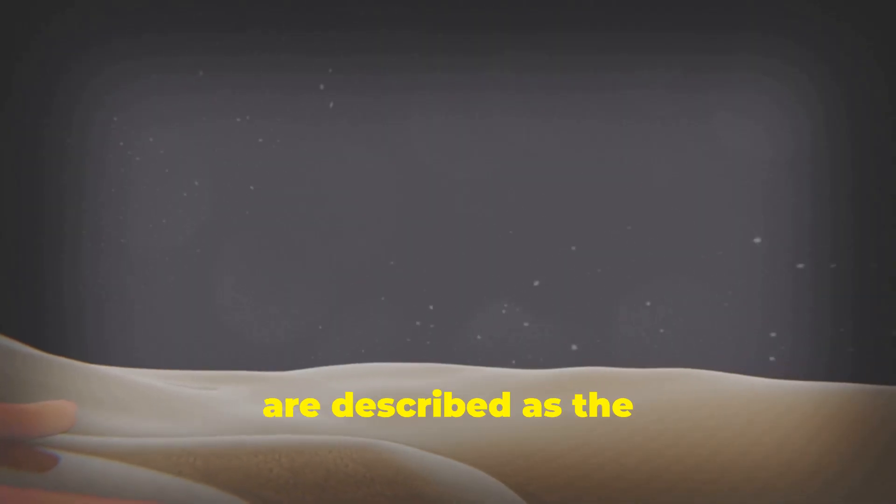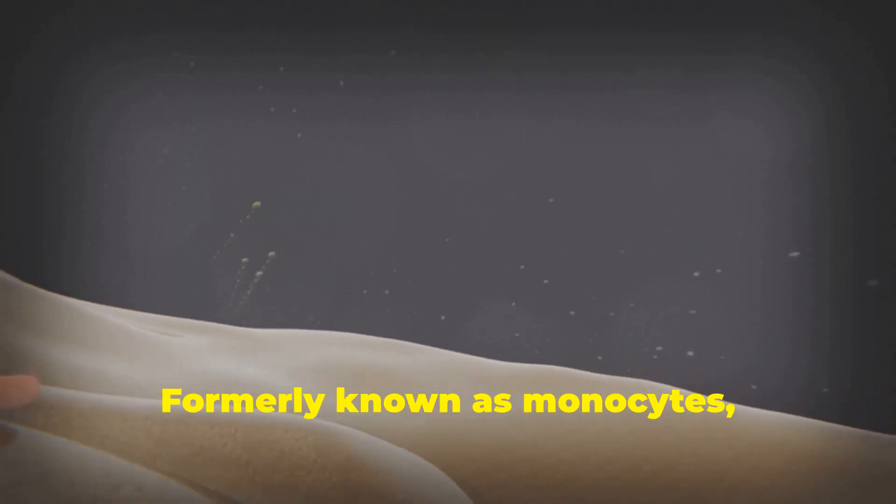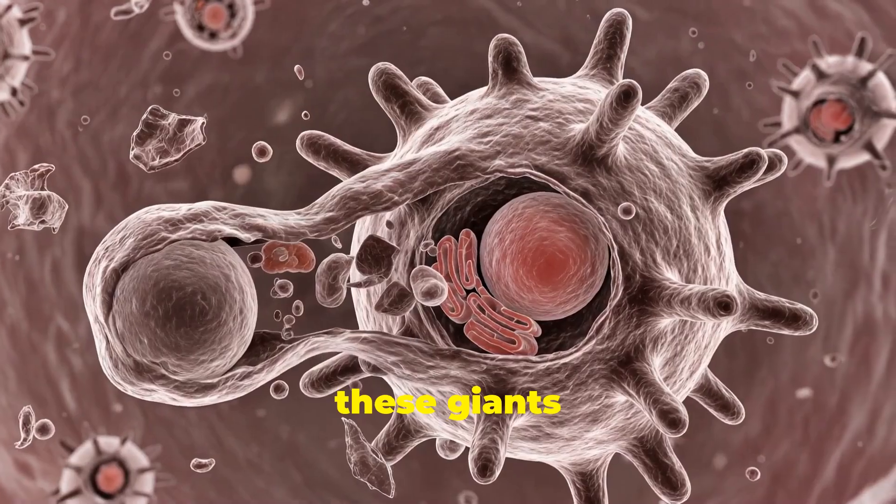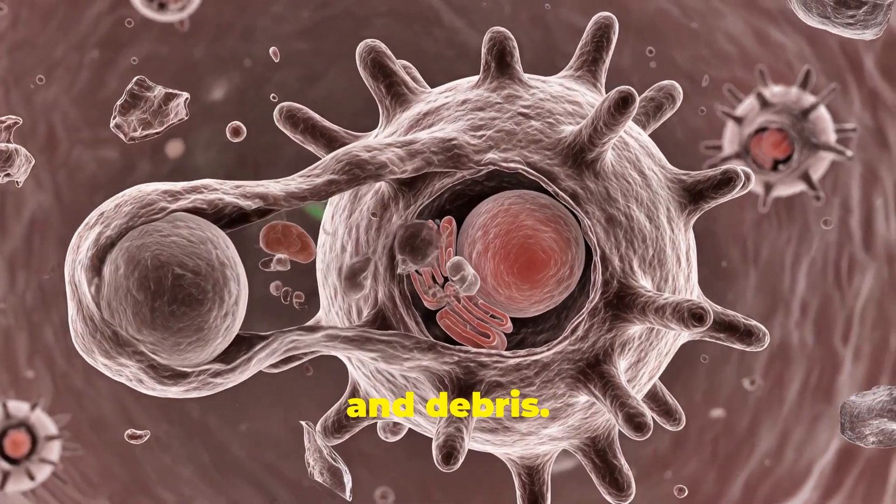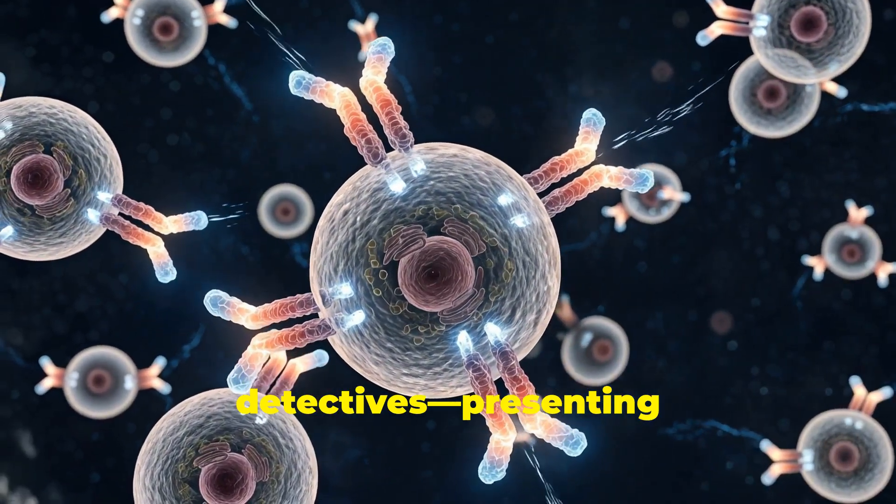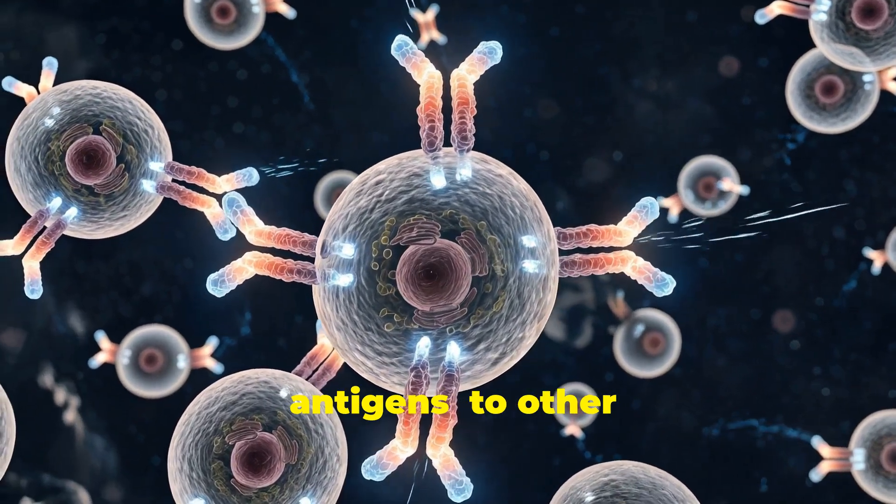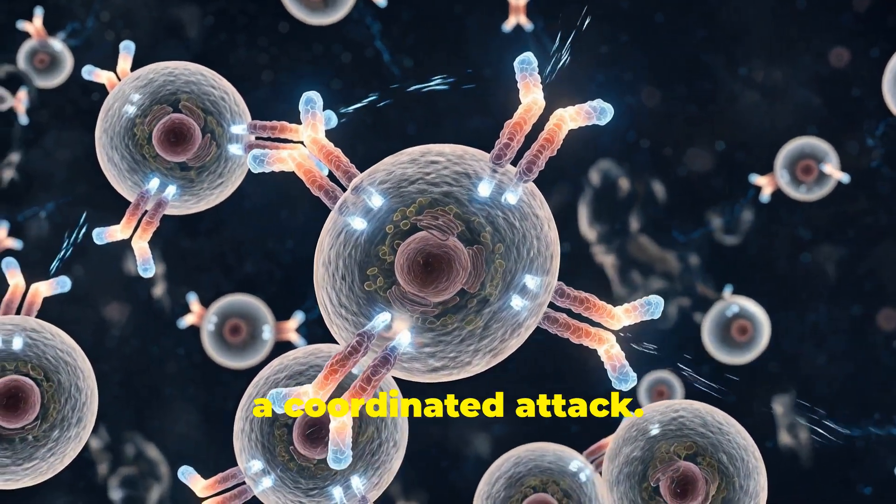Macrophages. These are the cleanup crew. Formerly known as monocytes, these giants consume dead cells and debris. But they're also detectives, presenting pieces of invaders' antigens to other immune cells to plan a coordinated attack.